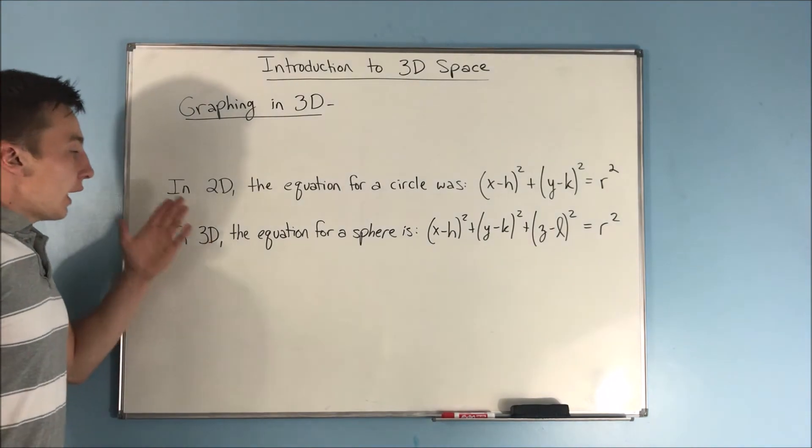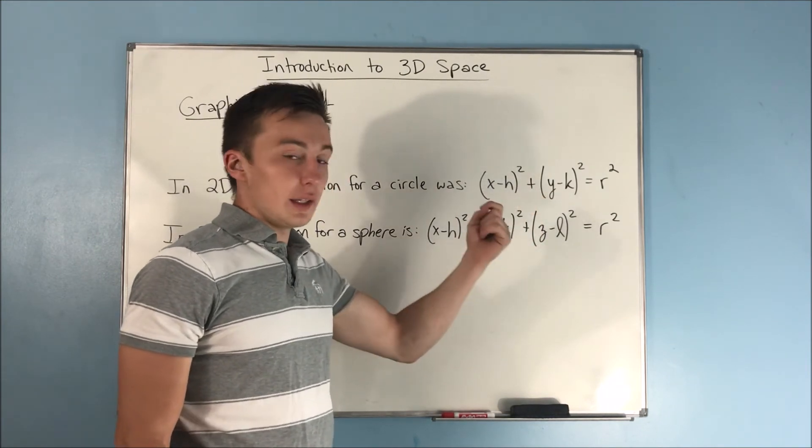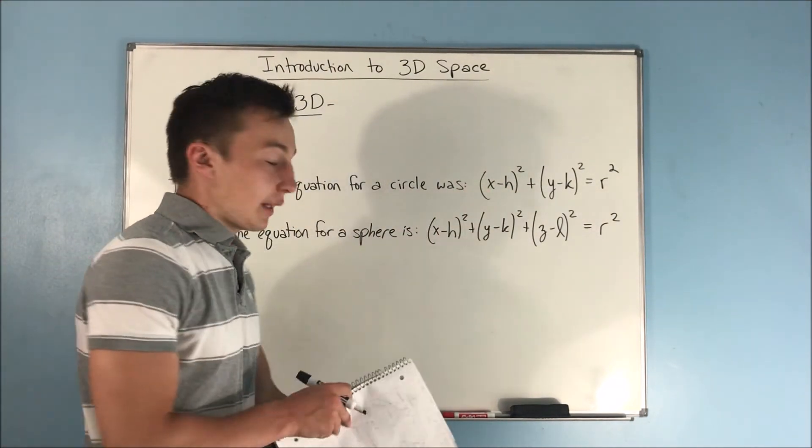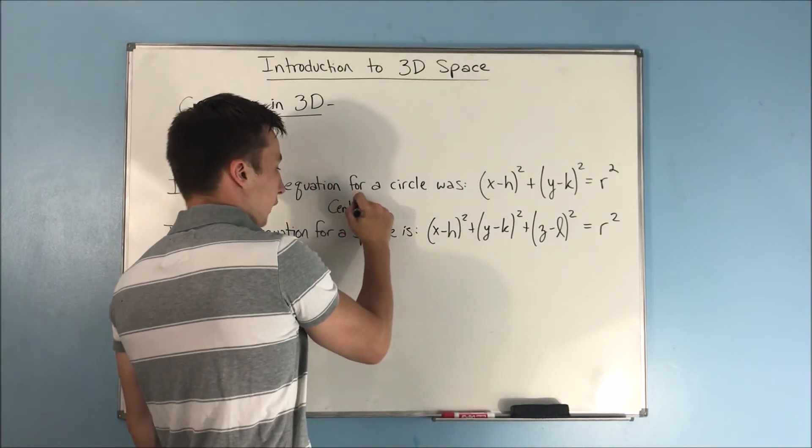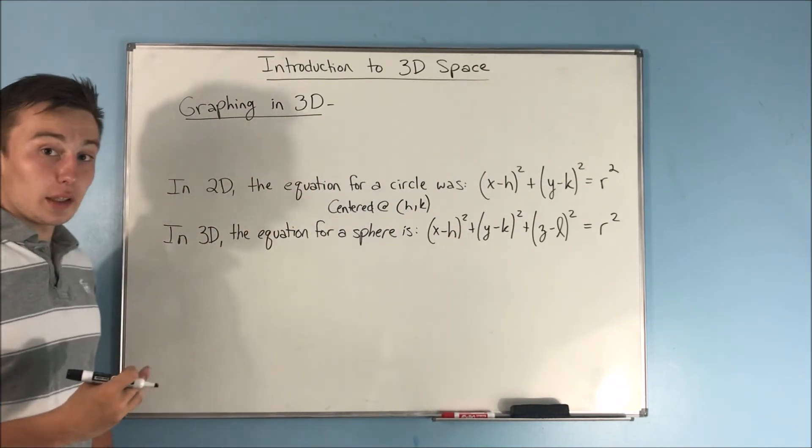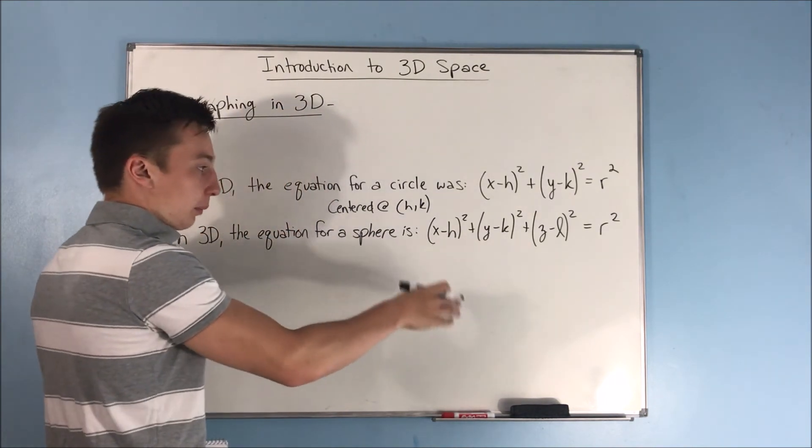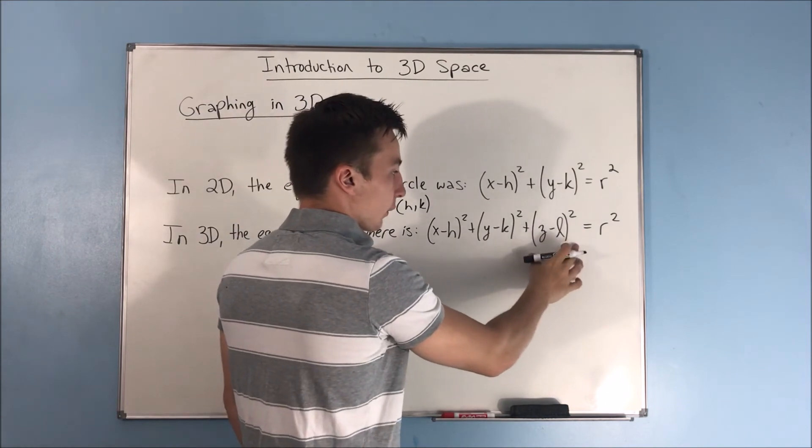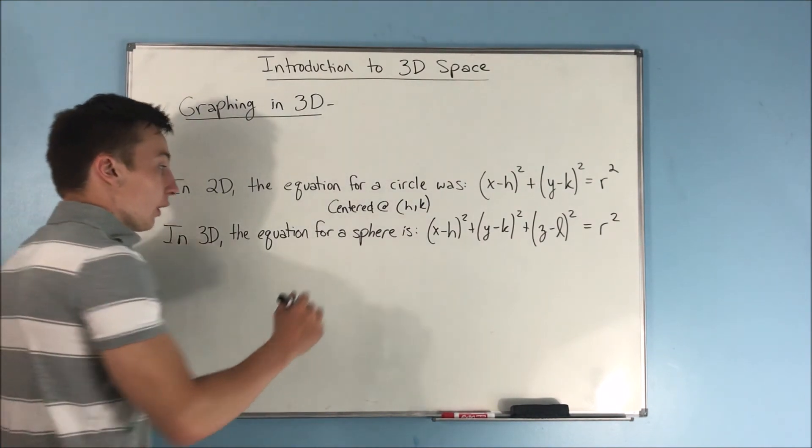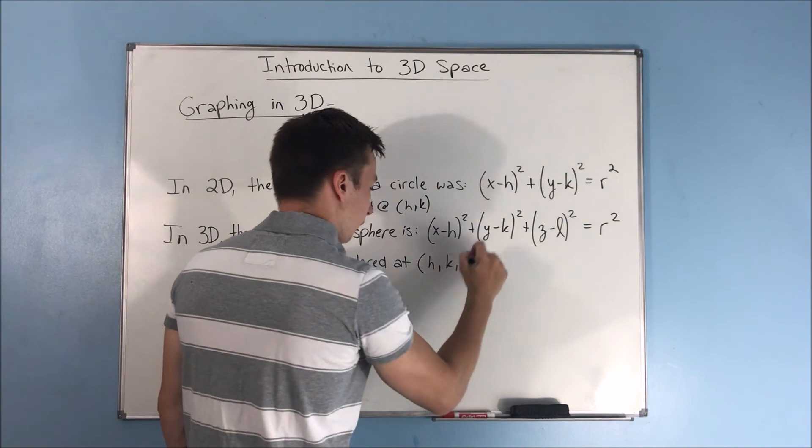So last thing here for this video. In two dimensions, the equation for a circle was X minus H quantity squared plus Y minus K quantity squared. And that was equal to the radius squared. And that circle, of course, was centered at H, K. But now, in 3D, we're going to be dealing with spheres and not circles. So the equation for a sphere is X minus H quantity squared plus Y minus K quantity squared plus Z minus L quantity squared. So that's new. And that's also equal to R squared. So the radius of your sphere. Now, this sphere is going to be centered at, you probably guessed it, H, K, L.